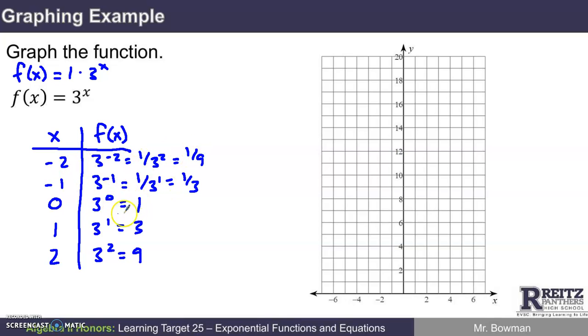I've got five ordered pairs that I can plot now. I can plot zero, one. I can plot one, three. I can plot two, nine. Three cubed is 27, which is off the graph. I can plot negative one, one third, which I'll ballpark a little bit. And negative two, one ninth, that's going to look really close to y equals zero.